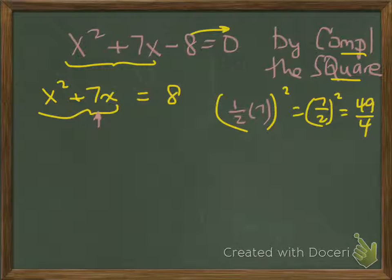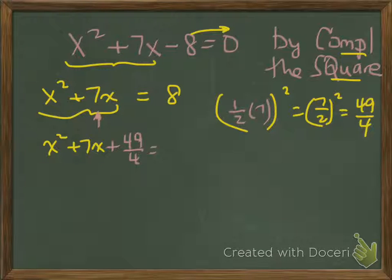So we're going to add 49 quarters to both sides of the equation. We'll end up with x squared plus 7x plus 49 quarters equals 8 plus 49 quarters. We've maintained equality by adding the same thing to both sides of the equation.